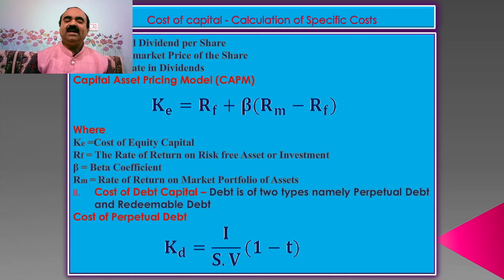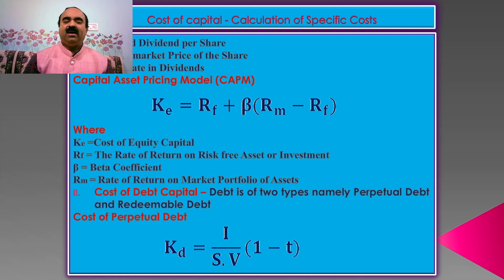According to the capital asset pricing model, shortly known as CAPM model, KE = RF + β(RM − RF), where KE is cost of equity capital, RF is the rate of return on risk-free asset or investment, beta is the beta coefficient, and RM is the rate of return on market portfolio of assets.